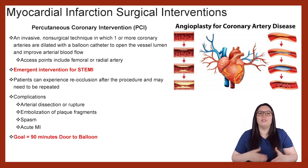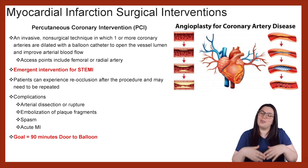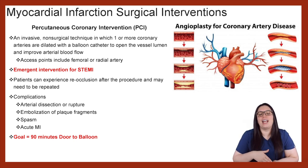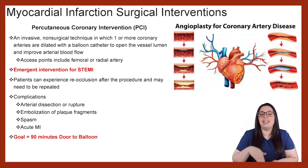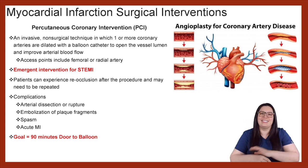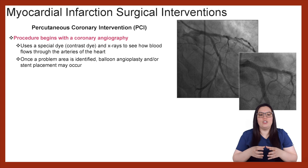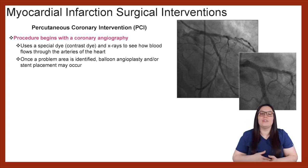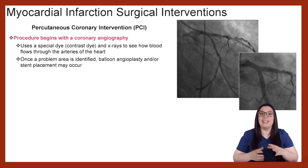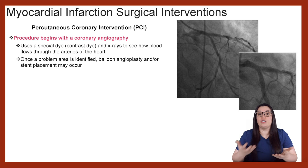Typically when a patient is admitted to the hospital — for my ER nurses out there — we have a 90-minute door-to-balloon time, meaning that as soon as they hit the door and are registered, we have 90 minutes to get them assessed and into cardiac catheterization to get that balloon placed. When the decision is made that the patient needs a PCI, the procedure begins with a coronary angiography. This uses a special contrast dye and x-rays to see how blood flows through the arteries in the heart. Once a problem is identified, they can use a balloon angioplasty and/or stent placement depending on how severe that occlusion is.